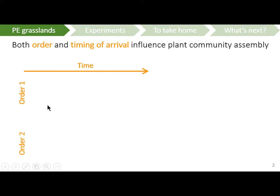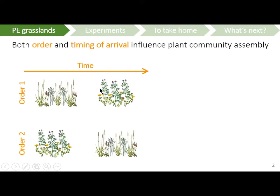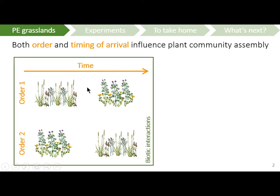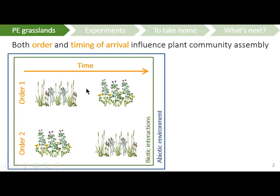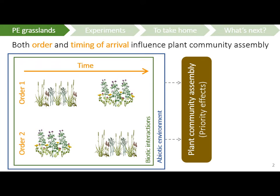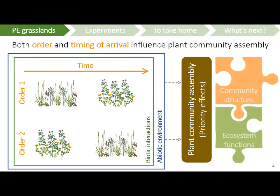You can consider here two different scenarios. The first scenario where you have grasses arriving before leguminous species, and the second scenario where you have the opposite — the leguminous species arriving before the grasses. Depending on the order and timing of arrival of these different functional groups, but also depending on the biotic and abiotic conditions, you can end up with two very different communities showing very different properties in terms of structure, species composition, relative abundance, and ecosystem functions like biomass production.